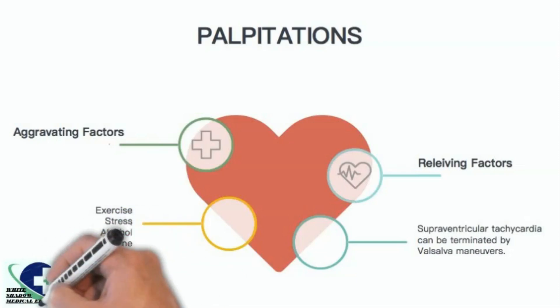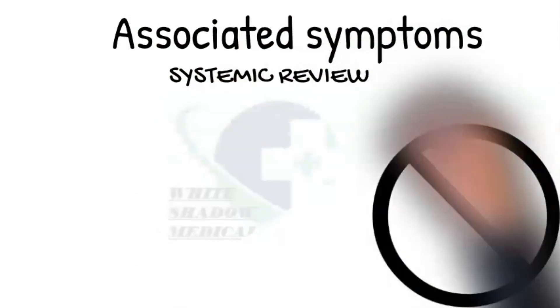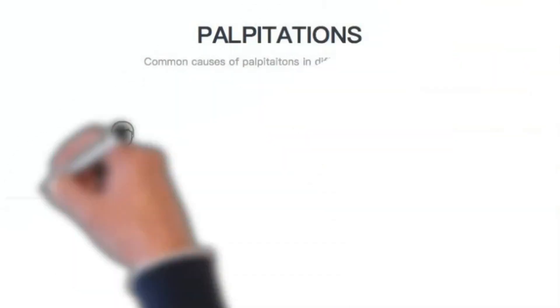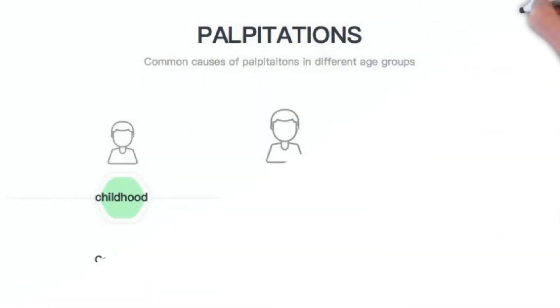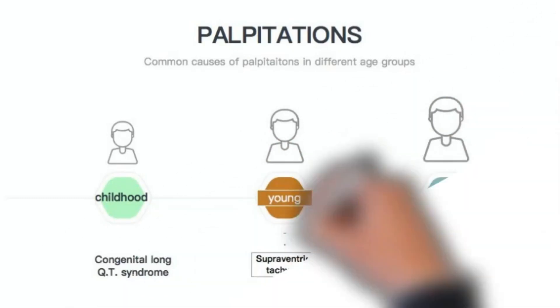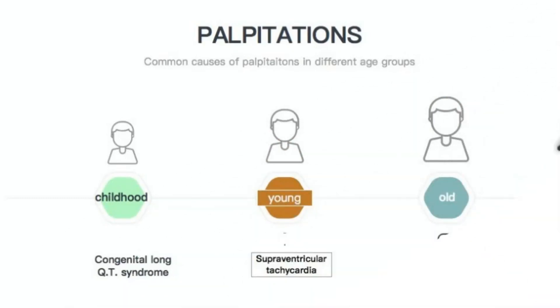Remember, supraventricular tachycardia can be terminated by Valsalva maneuvers. Associated symptoms: Age may provide a significant clue towards the diagnosis. Supraventricular tachycardia usually causes palpitations in a young patient. Meanwhile, congenital long QT syndrome may present in childhood and adolescence. Whereas, atrial fibrillation is more common in a patient older than 65 years of age.